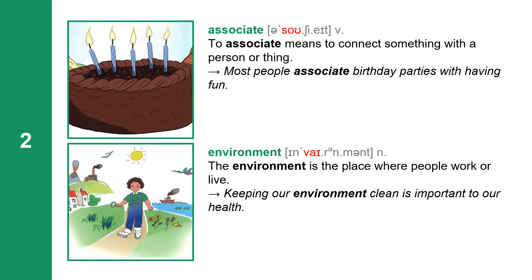The first word we are going to study is associate. Associate has four syllables: A-S-S-O-C-I-A-T-E. The second syllable O sounds like O, and the first S is cancelled. Associate means to connect something with a person or thing. Most people associate birthday parties with having fun.